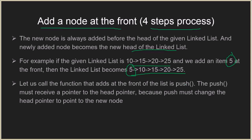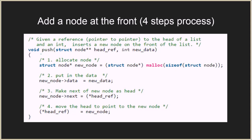We'll call this function 'push'. The push function doesn't return anything but it takes two arguments: the first one is a pointer pointing to the head pointer — notice the double star here, because this is a pointer which is pointing to the head pointer — and the second argument is the data to be inserted in the new node. First, we allocate memory using the malloc operator and we allocate the size of the structure node.